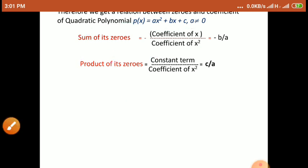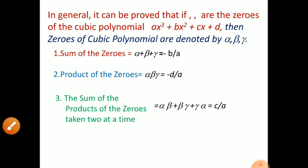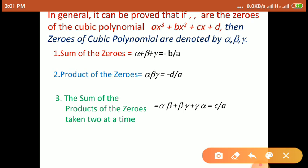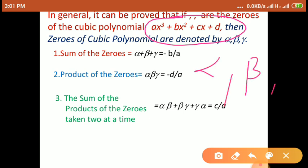Similarly, we also saw the relation for cubic polynomials. The general form of a cubic polynomial is ax³ + bx² + cx + d. Its zeros are generally denoted by the letters alpha, beta, and gamma. The sum of zeros — that is, the sum of these three zeros — has the formula minus B upon A.